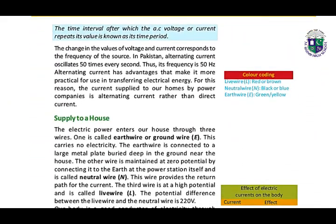The time interval after which the AC voltage or current repeats its value is known as its time period. The change in the value of voltage and current corresponds to the frequency of the source. In Pakistan, alternating current oscillates 50 times every second; thus, its frequency is 50 Hz. Alternating current has advantages that make it more practical for use in transferring electrical energy.